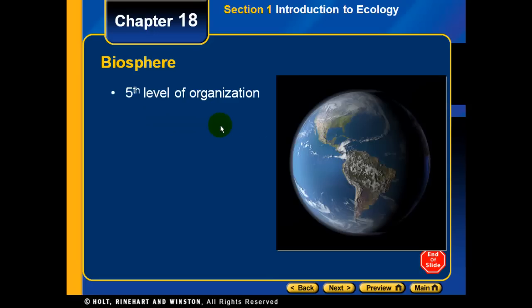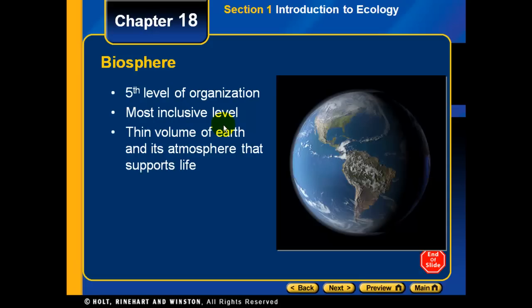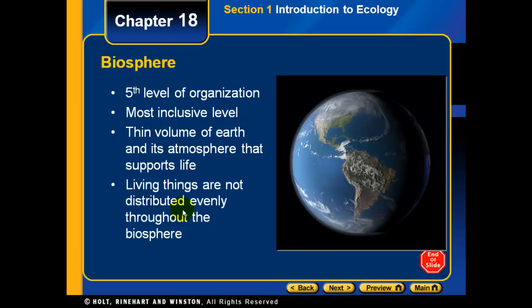The last and fifth level of organization is the biosphere. It's the most inclusive level — the biggest. The thin volume of Earth and its atmosphere that supports life is an example of a biosphere. Living things are not distributed evenly throughout the biosphere.